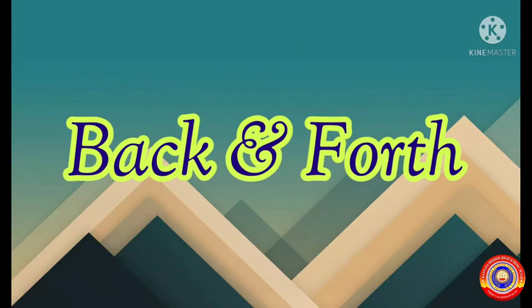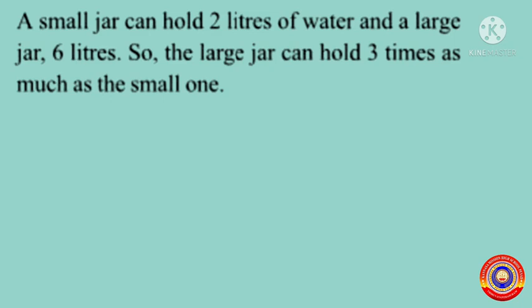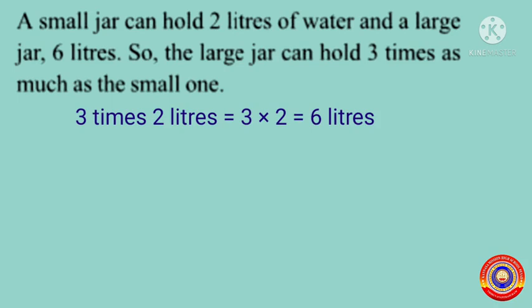Let's start our class. Here is an example for you. A small jar can hold two liters of water and a large jar six liters, so the large jar can hold three times as much as the small one. That is: three times two liters is equal to three multiplied by two, that is equal to six liters.